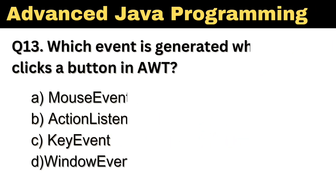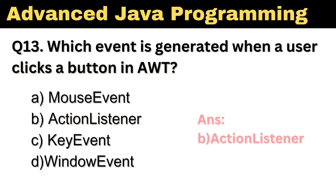Question number 13: Which event is generated when a user clicks a button in AWT? The right answer is Option B: ActionListener.